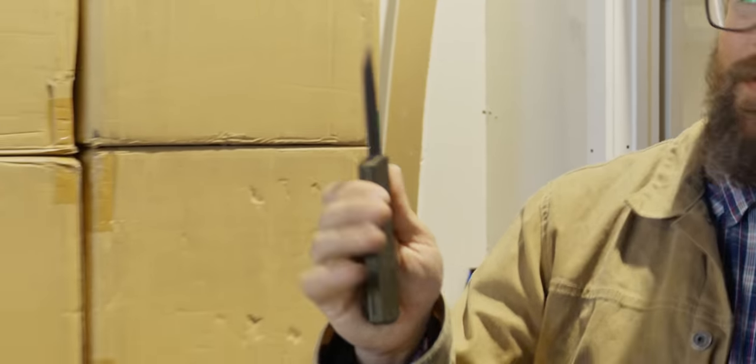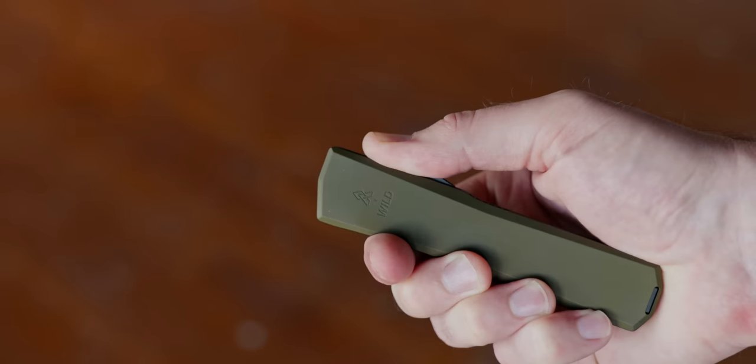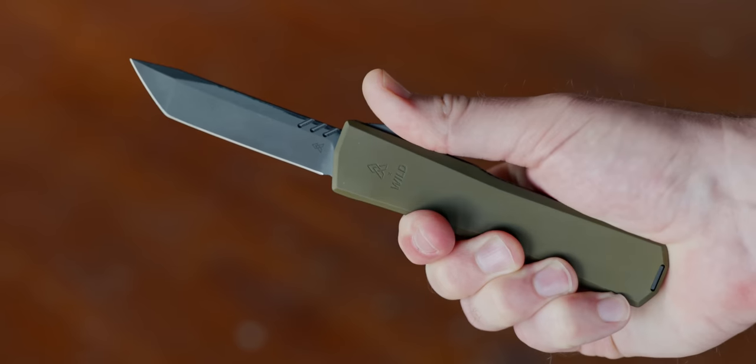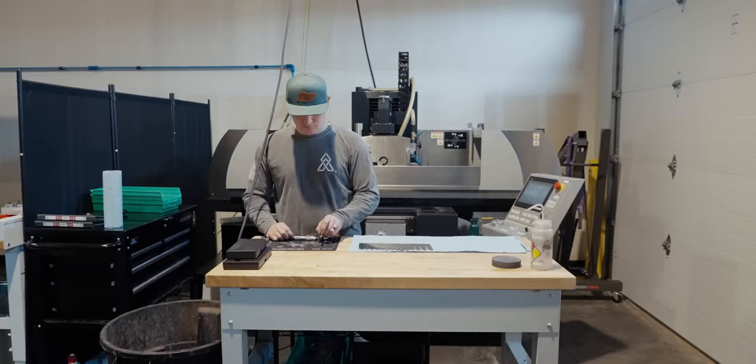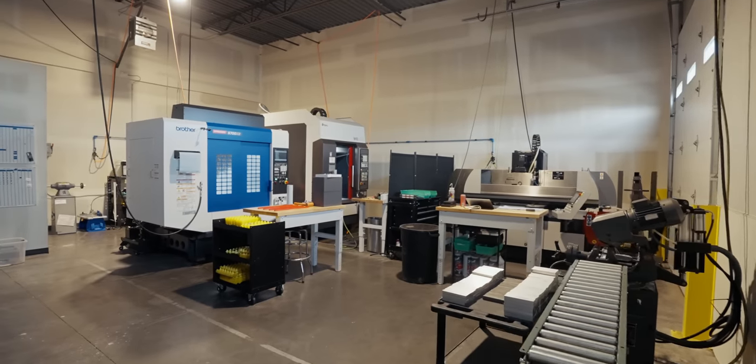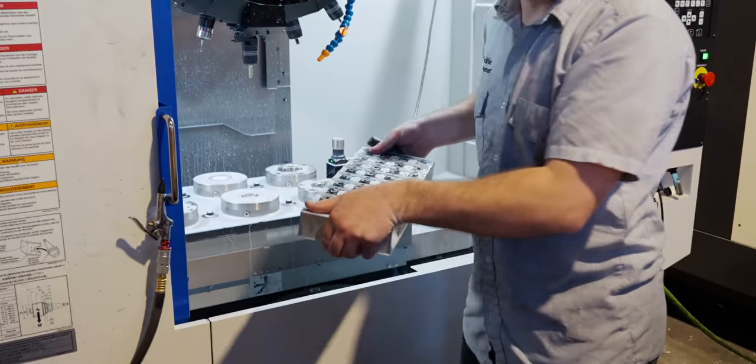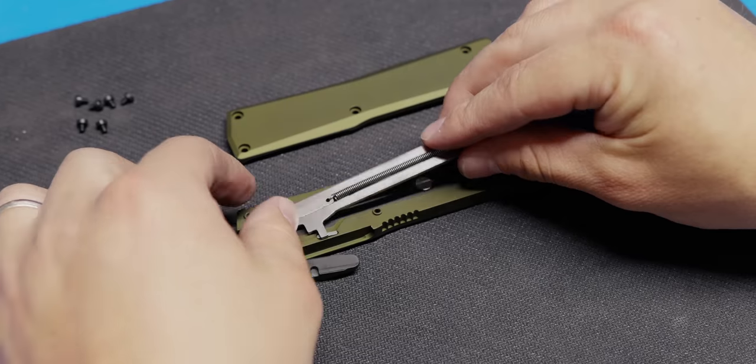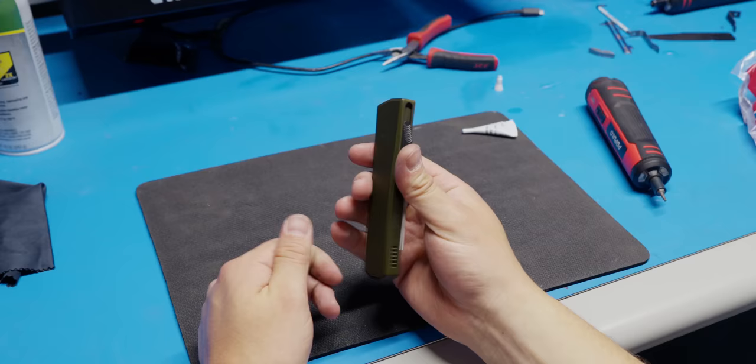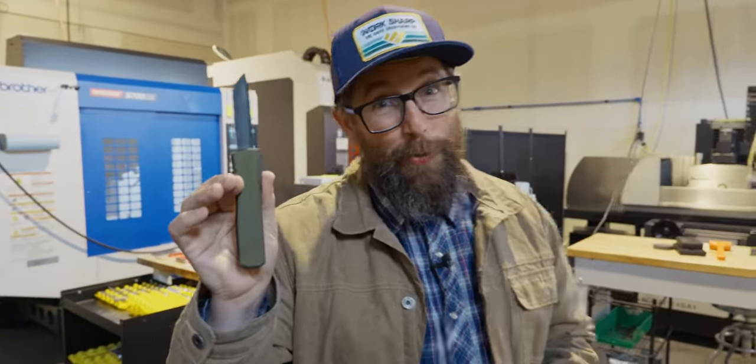It's no secret that OTFs, or out-the-front knives, are some of the coolest and most complicated knives out there. But it is a bit of a secret as to how they are made. So we reached out to our buddies over at Axial Knives here in Utah, and they decided to give us a backstage pass, show us the secret sauce on how OTF knives are made. We're super excited, and we got a little secret of our own.